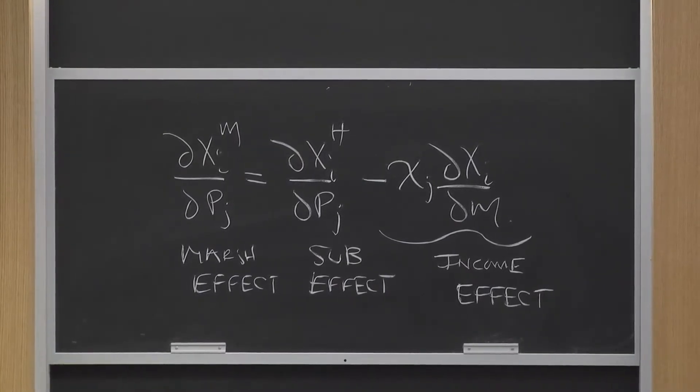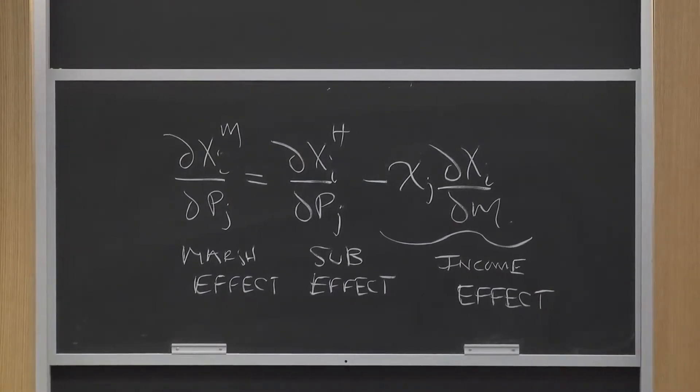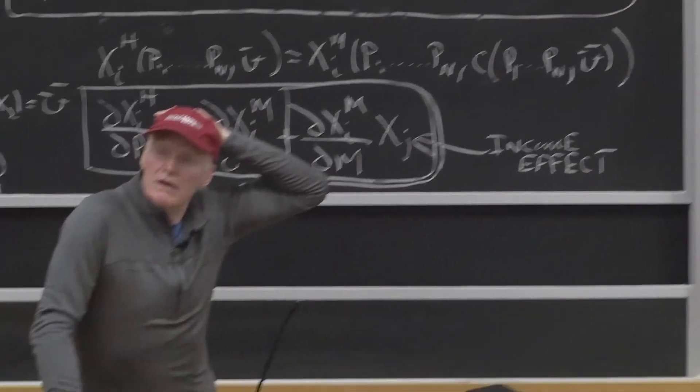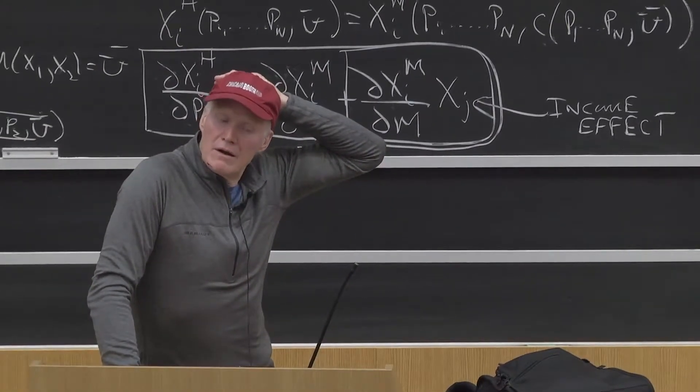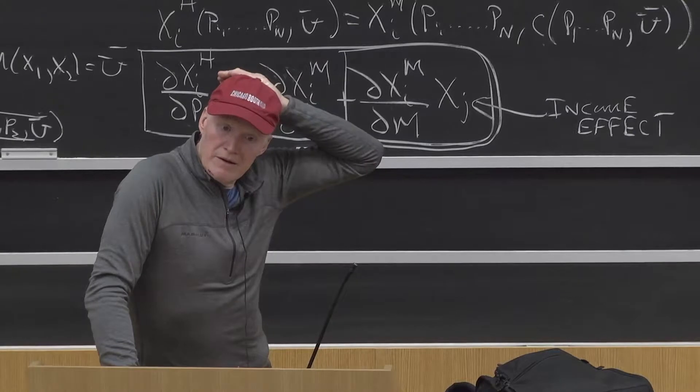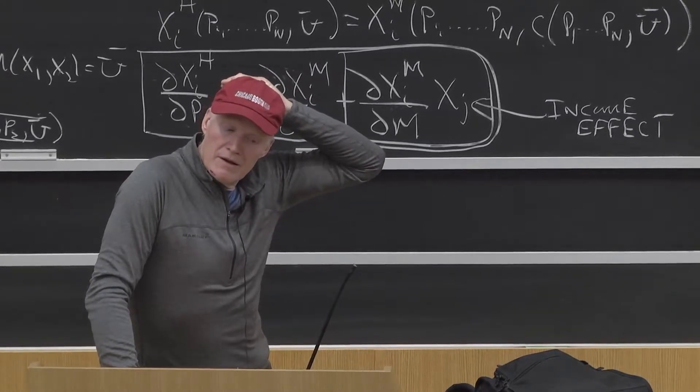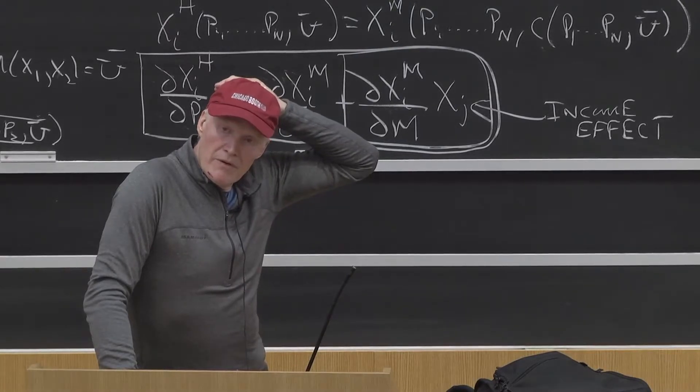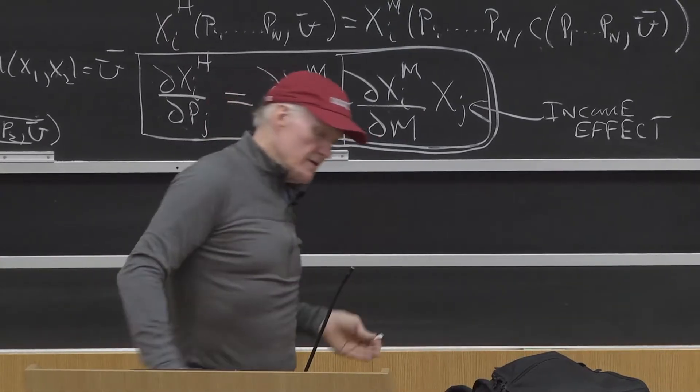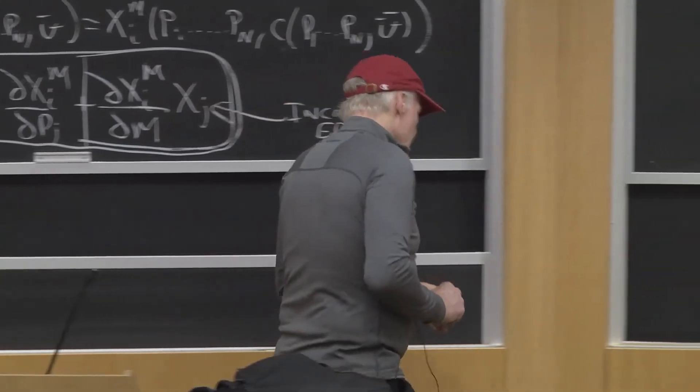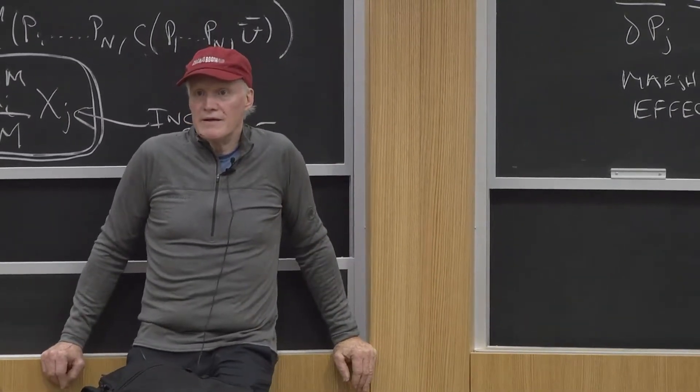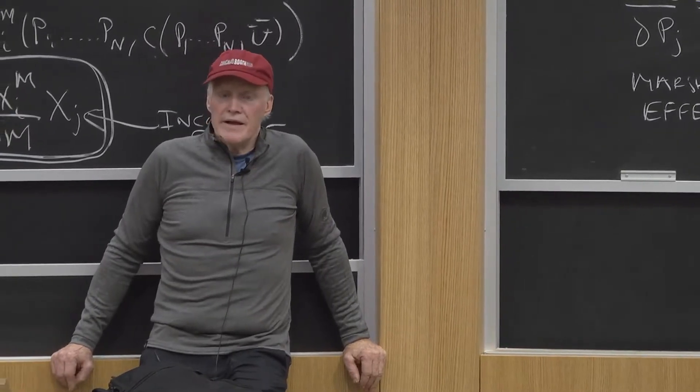When the price of good J increases, when price of J goes up by a dollar, even if you wanted to just keep buying the same amount of good J, which is sort of an approximation of your behavior, then you have to spend more of your budget on the same amount of good J, and then there's less left over to buy other goods, so you have to decrease all your other purchases to compensate for the extra income good J.